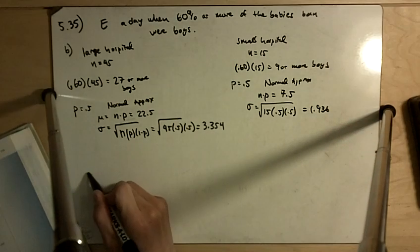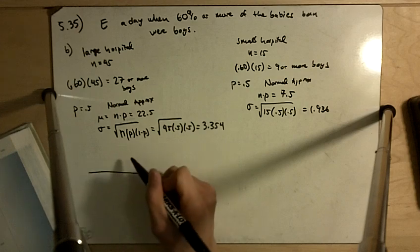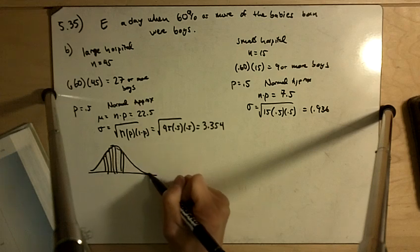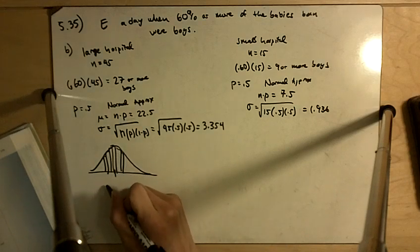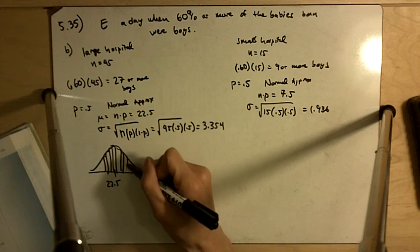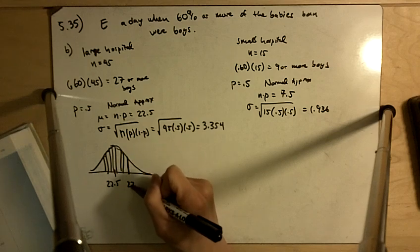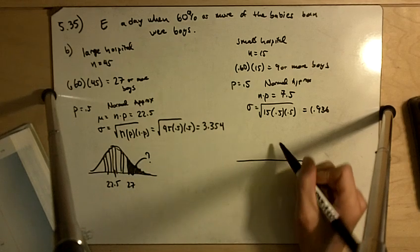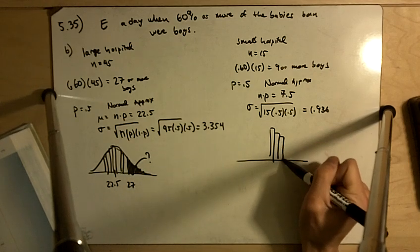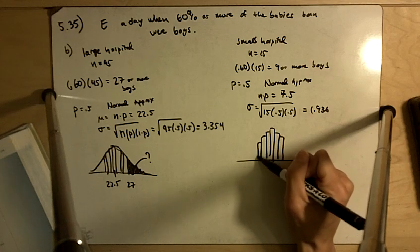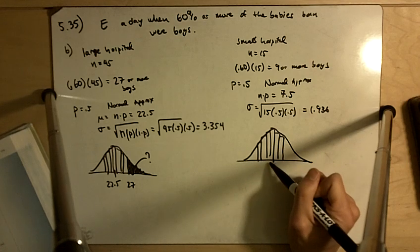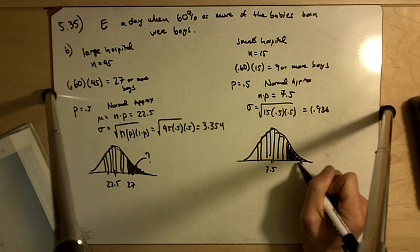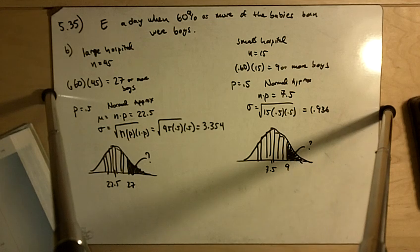All right, so we're going to do a normal approximation here. And so here we've got the binomial or whatever, and we're centered at 22.5. And we're looking at on days when we have 27 or more boys being born. And we want to know what is this area here. And over here, we're centered at seven and a half. And we want to know the days when nine or more babies are being born.